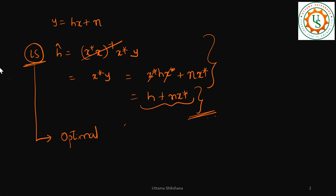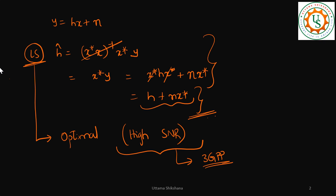We considered that the least square solution is the optimal solution under certain conditions — that is, high SNR. We saw in the previous video that to support high SNR, the 3GPP specification has provided options: transmit the pilots with higher power, and also transmit pilots across multiple symbols to perform averaging, which boosts your SNR.